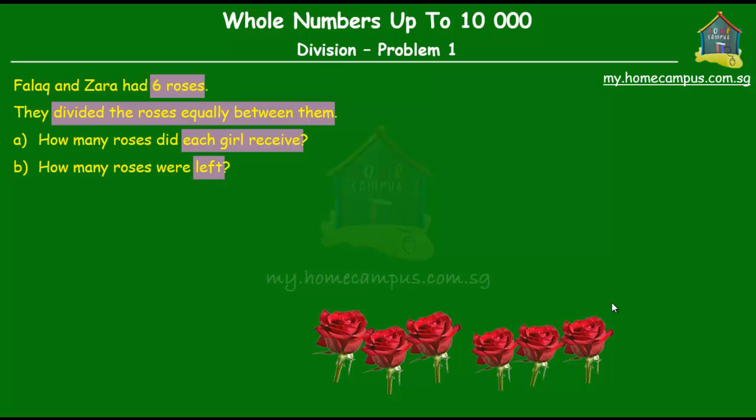Alright, so the question is, there are six roses and there are two girls. How many roses will each girl get if they divide those roses? Okay, so we have to do six divided by two. Six for the roses, two for the two girls.